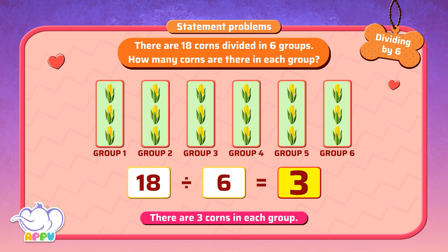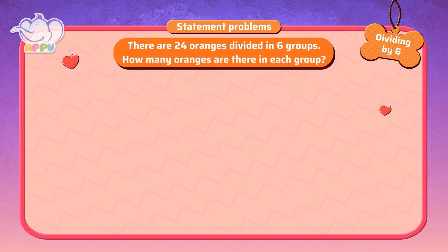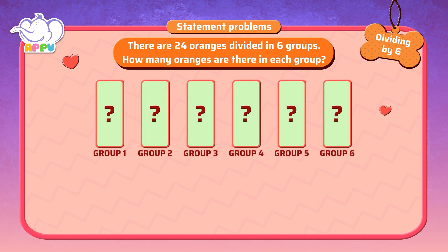How many corns are there in each group? There are 24 corns divided in 6 groups. How many corns are there in each group? To find the number of corns in each group, we divide 24 equally among 6 groups.